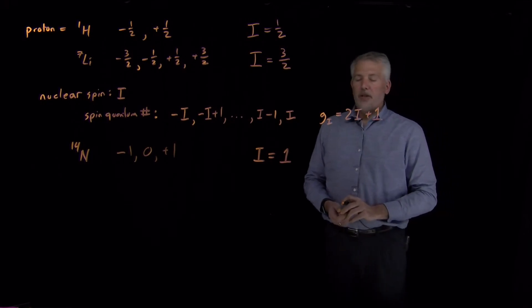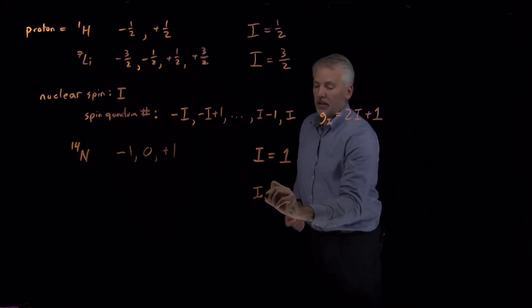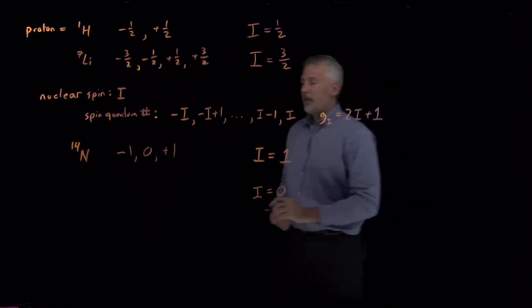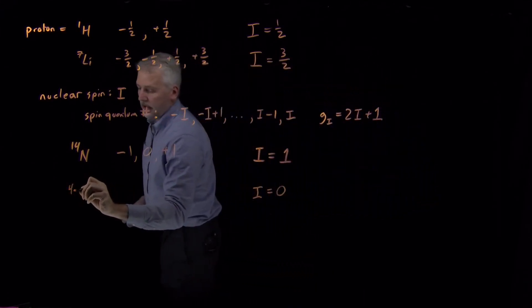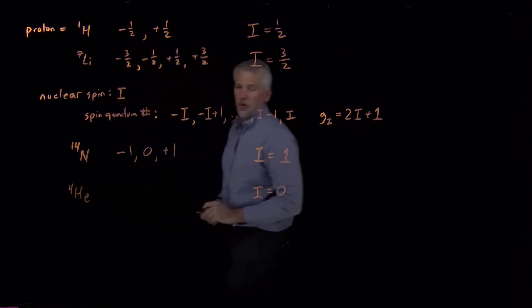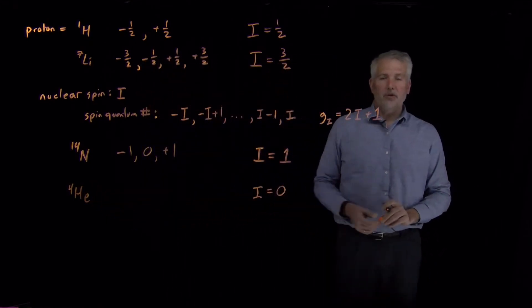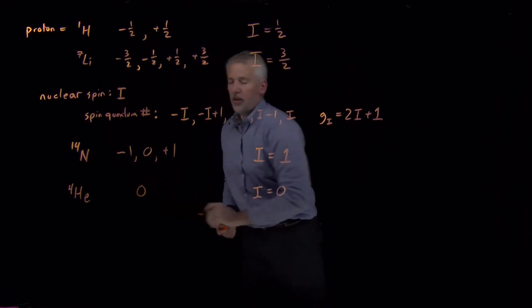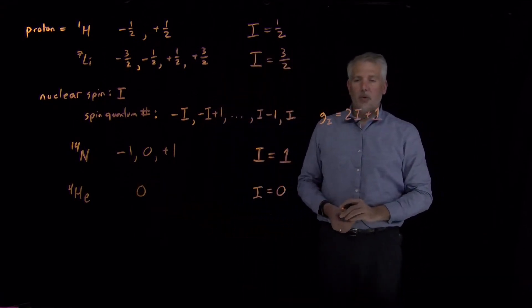In fact, the nuclear spin doesn't even always have to be a positive number. The helium-4 nucleus has a nuclear spin of zero, so the only possible spin quantum number it can have is spin zero — there's only one value it can have for its nuclear spin.